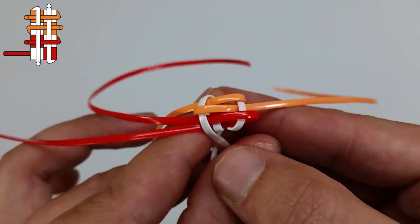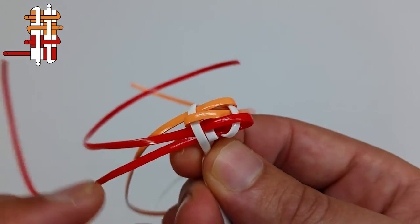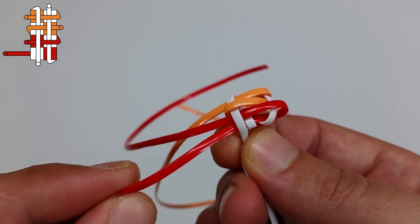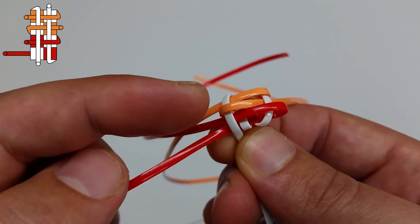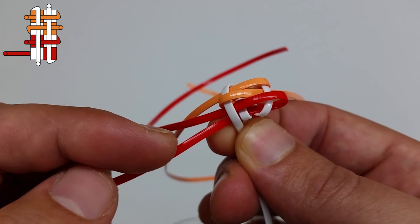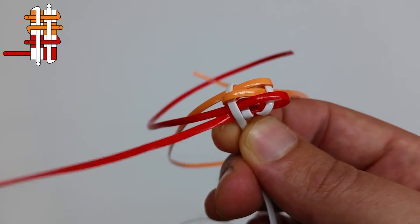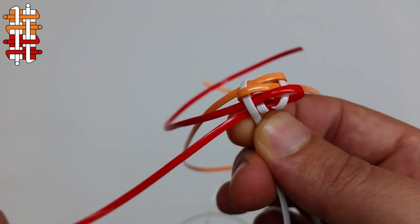Finally, we'll take the last red string and make sure the first red is in between the orange loop and the last string. We're going to weave the last red string over and under.